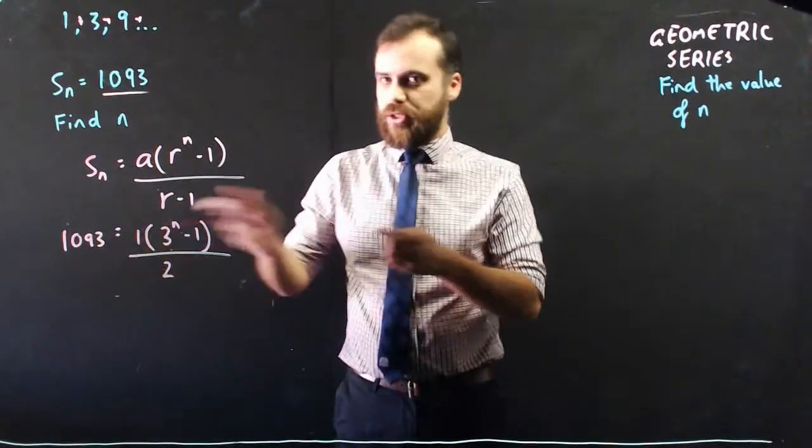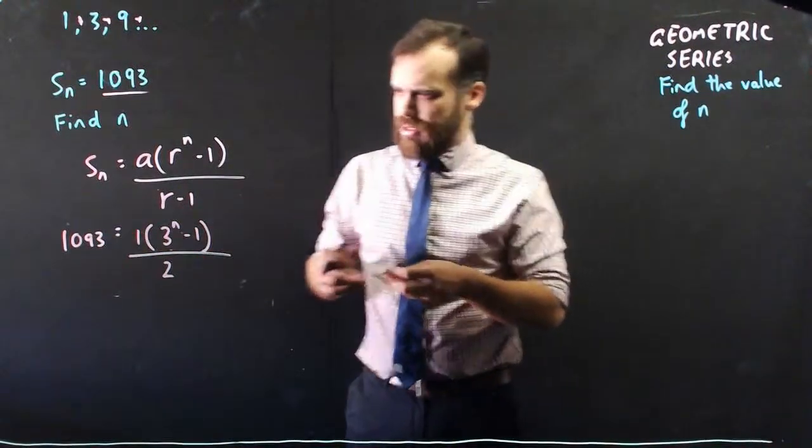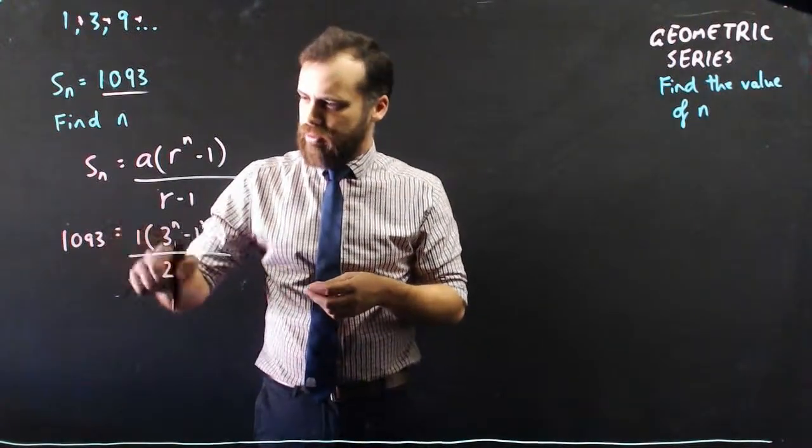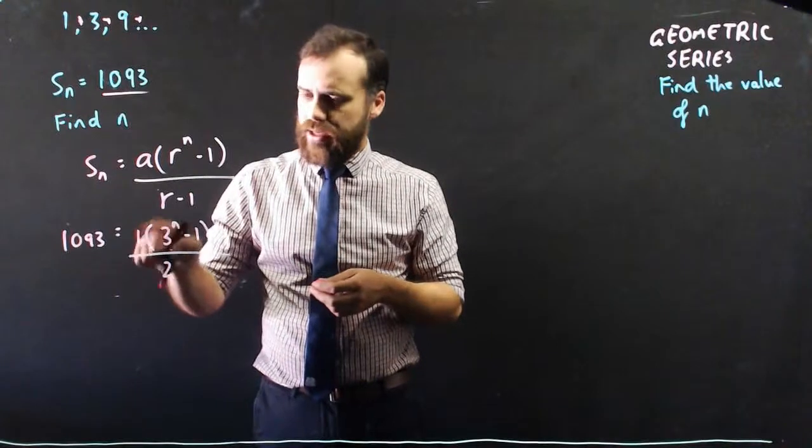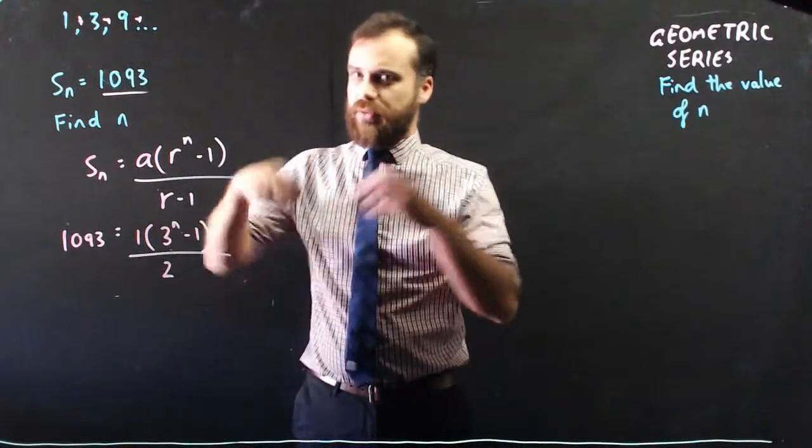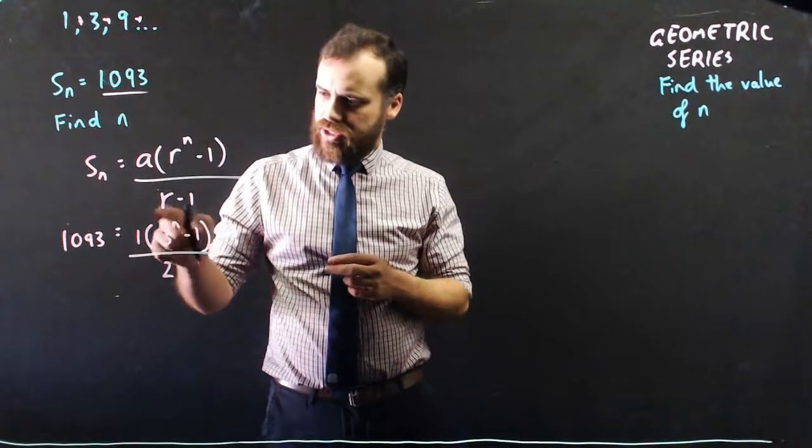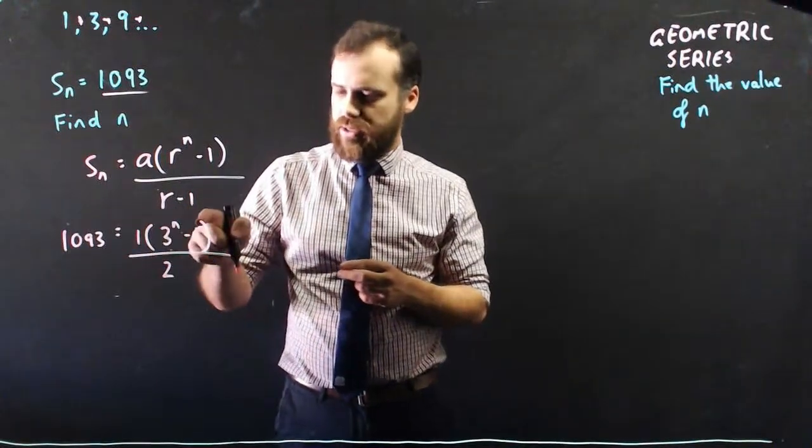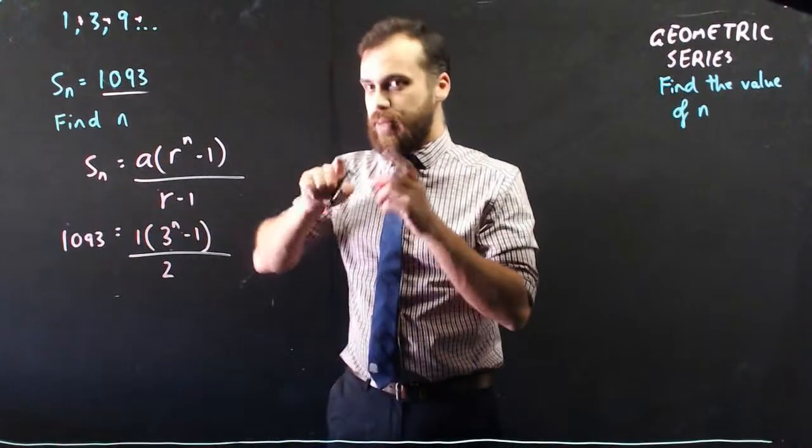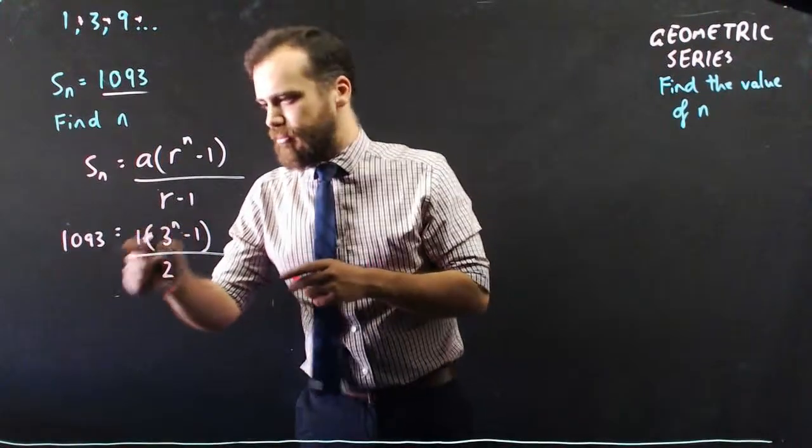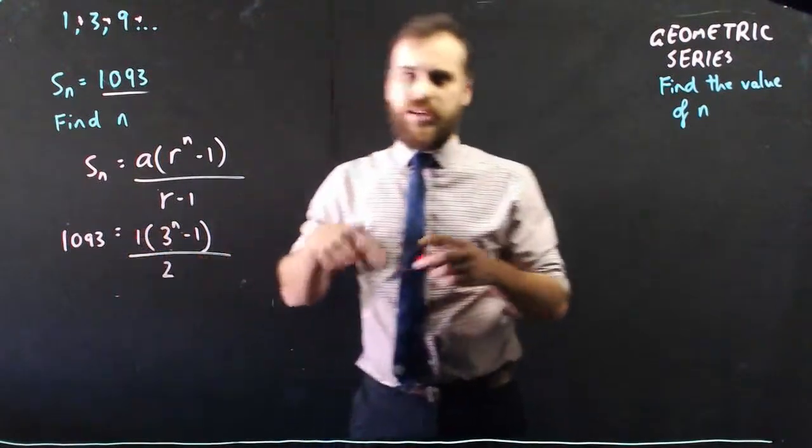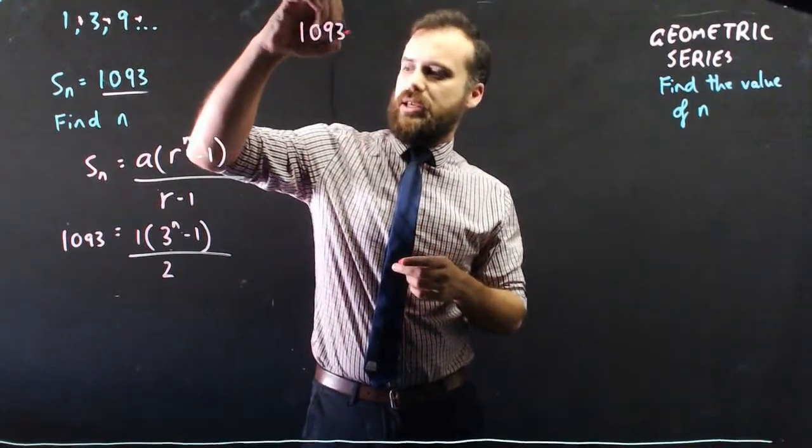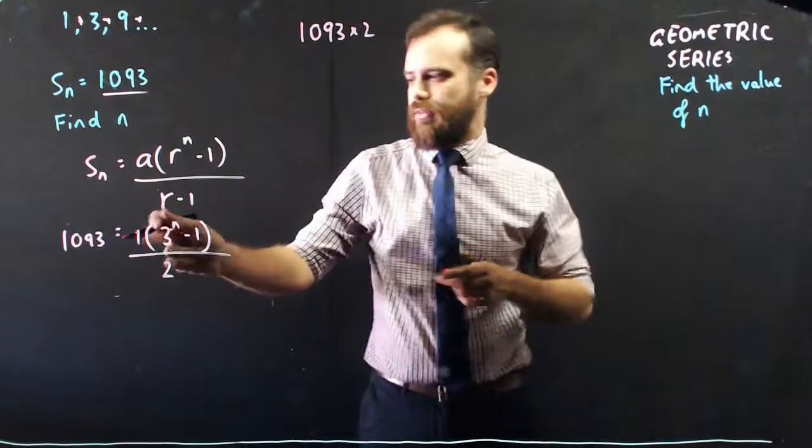Okay, so pretty much from there we just need to rearrange this thing. Now the 2, we can multiply by the 2, and the 1 here, if the 1 was a different number like 5 or 7, you might be tempted to expand the brackets and do 5 times 3 to the n, 5 times negative 1. What you're better off doing though is dividing by that number. So even though we don't need to divide by 1, I'm just going to put it in my working just so you can see what I would do if that number wasn't 1.